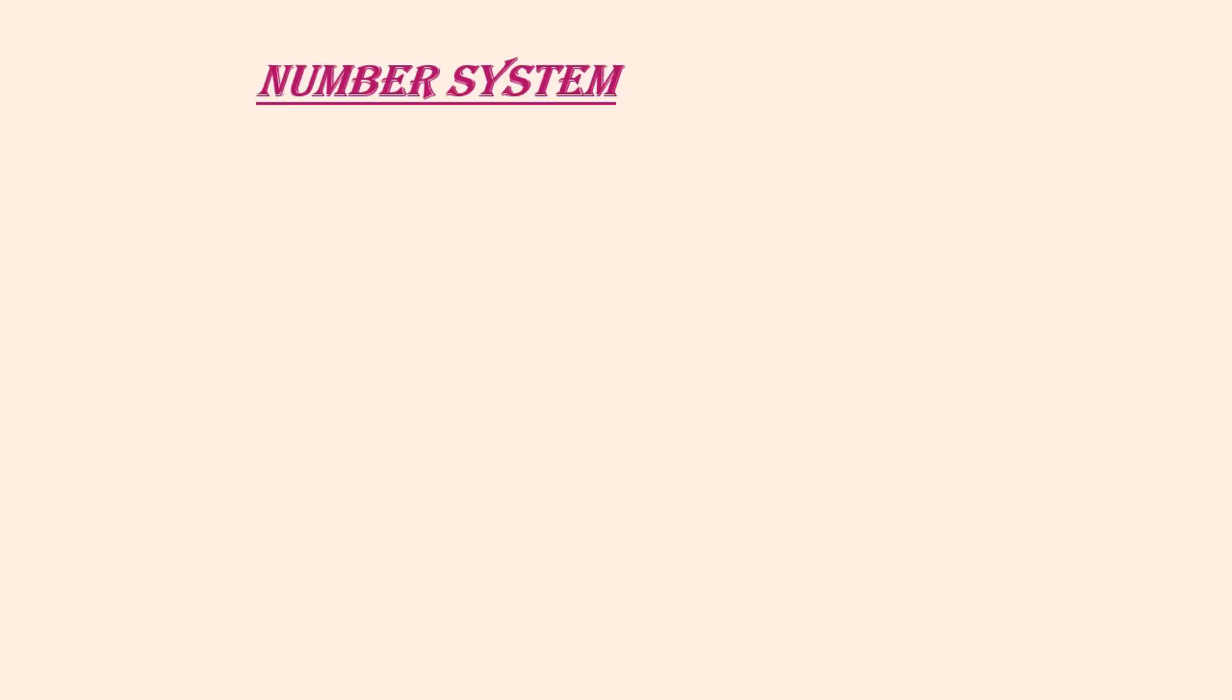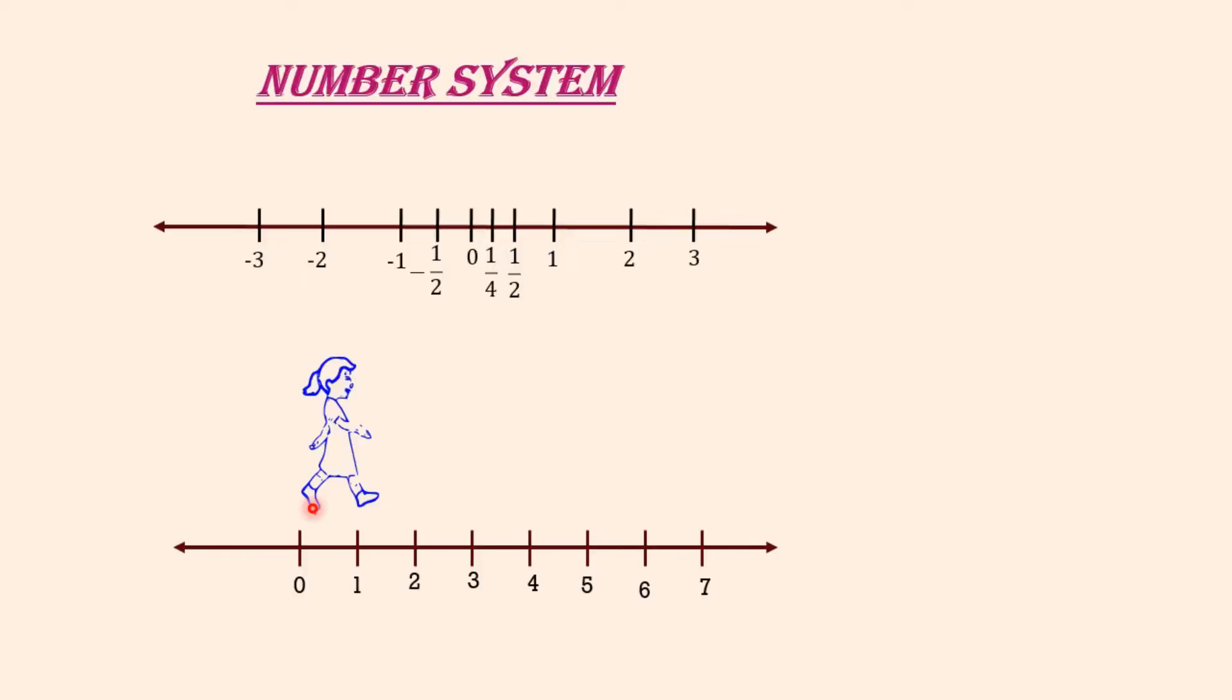Number system - you already know about the number system from your earlier classes and you have learned about the number line and how to represent various types of numbers on it. Just imagine this girl - her name is Veena. She starts from zero and goes on walking along this number line in the positive direction. As far as her eyes can see, there are numbers and numbers.